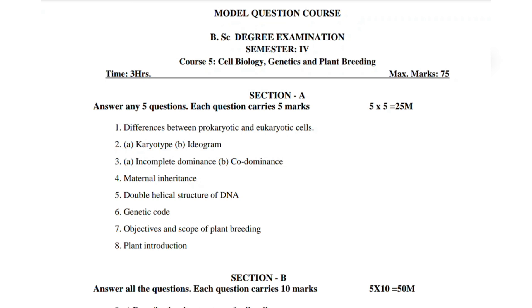First, the short questions: first, differences between prokaryotic and eukaryotic - very easy question. Second, karyotype and ideogram. Third, incomplete dominance and co-dominance. Fourth, maternal inheritance. Fifth, double helical structure of DNA. Sixth, genetic code. Seventh, objectives and scope of plant breeding. Eighth, plant introduction.